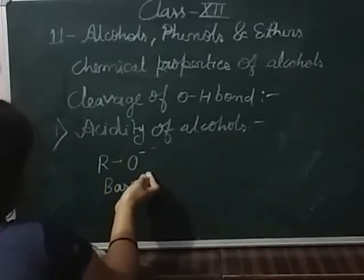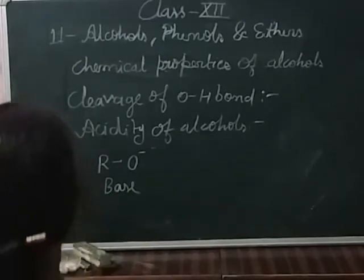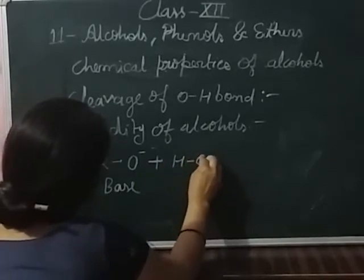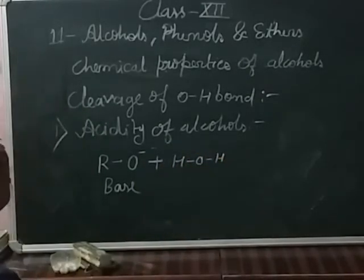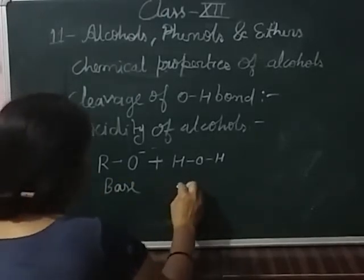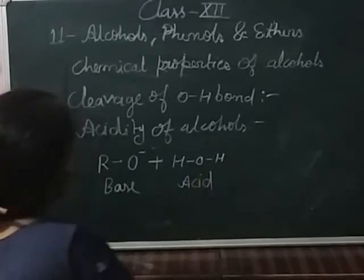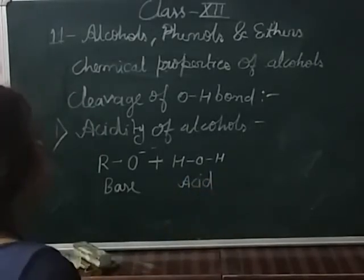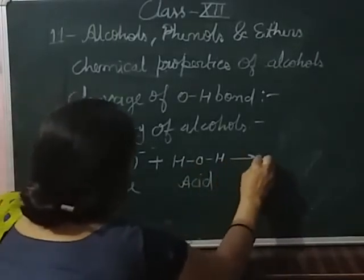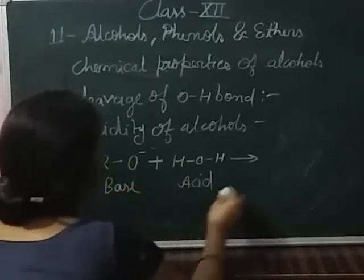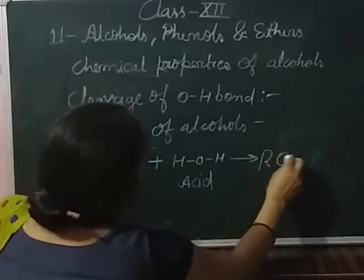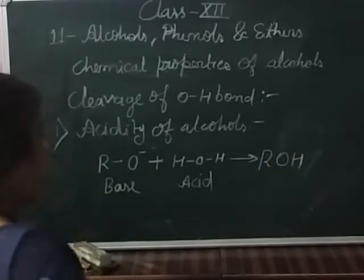The alkoxide ion is a strong base because it is a proton acceptor. Water is H-O-H. In this reaction, water acts as an acid because it releases a hydrogen ion. This hydrogen ion combines with the alkoxide ion and forms R-O-H, which is the conjugated acid.